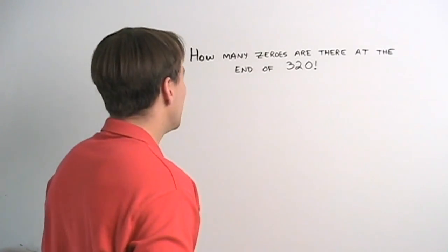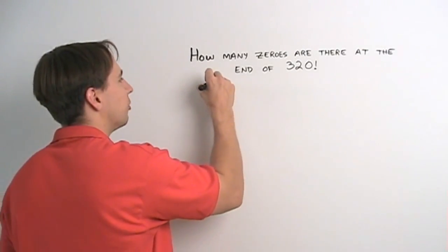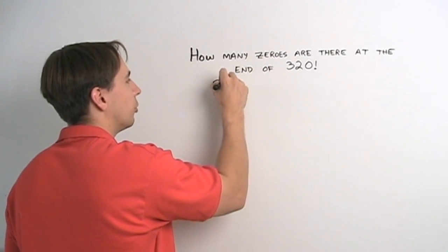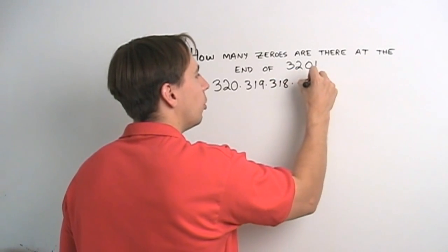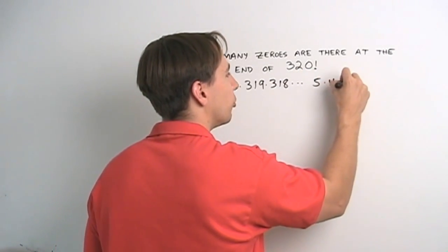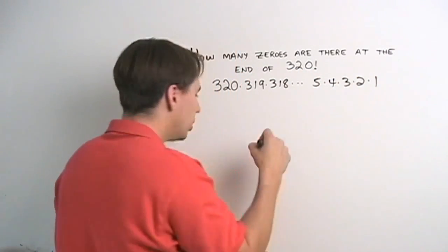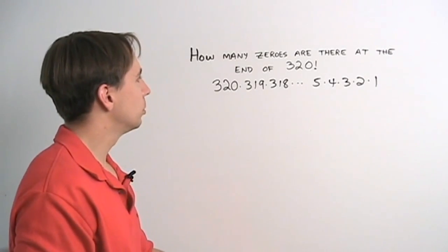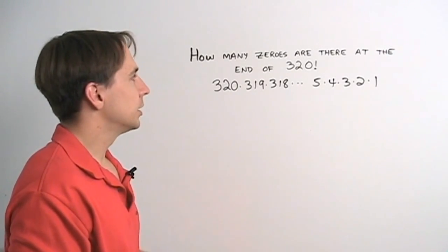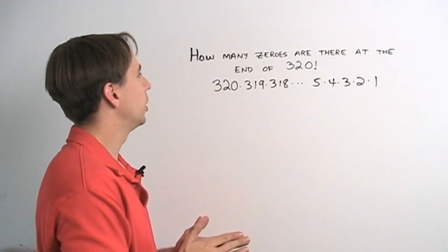And you might start off by saying, well, let's just figure out what 320 factorial is. Count the zeros at the end. We have 320 times 319, 318, and so on down to 5 times 4 times 3 times 2 times 1. Then we multiply it out. We have 320 times 319 times 3. Yeah, that's going to take a long time. We probably don't want to do that.